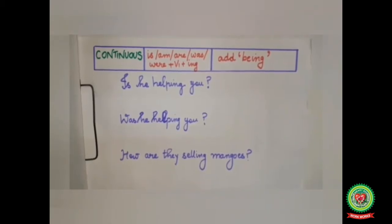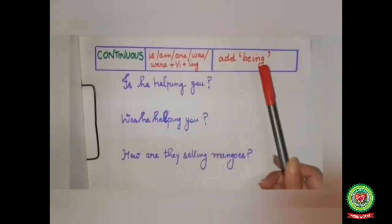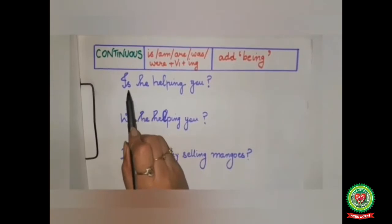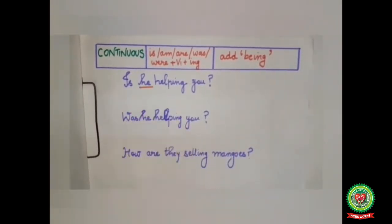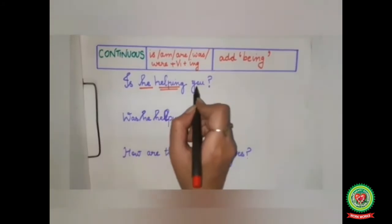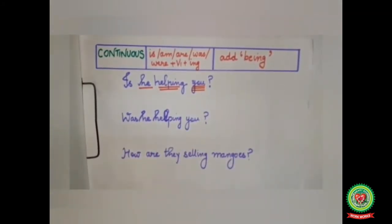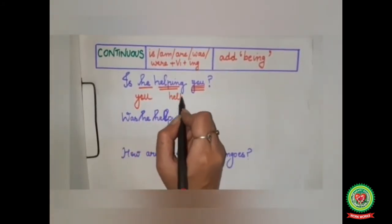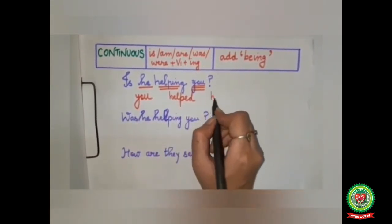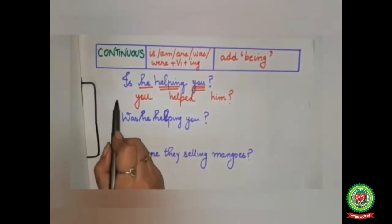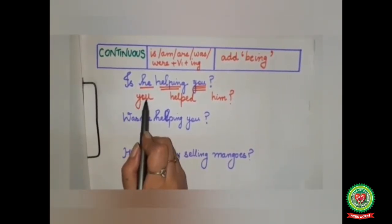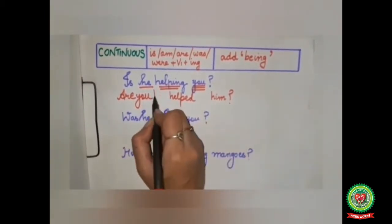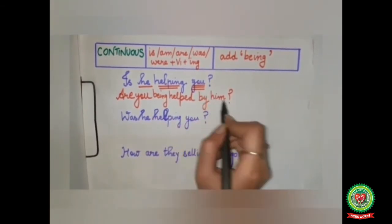If your active voice question is given in the continuous tense, then in the passive voice we have to add the word 'being'. We will understand this with the help of given examples. The first question is: 'Is he helping you?' Here 'he' is your subject — single underline; 'helping' — verb double underline; and 'you' is your object — triple underline. As we have done previously, 'you' will come in the beginning. 'Help' will change into 'helped'. 'He' will go to the end and become 'him'. Now here we have to add the helping verb according to 'you' — with 'you' we will use the word 'are', and we have to add the word 'being' also. So the answer becomes: 'Are you being helped by him?'